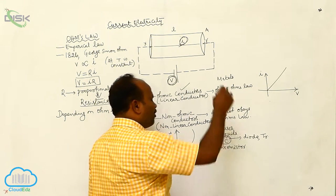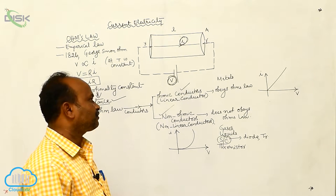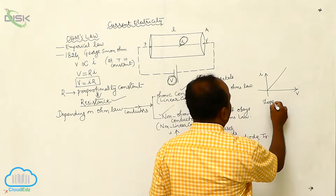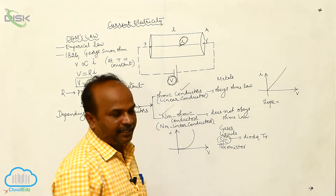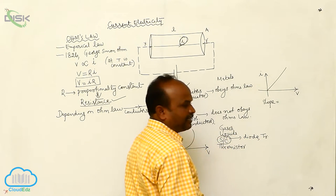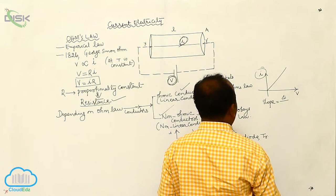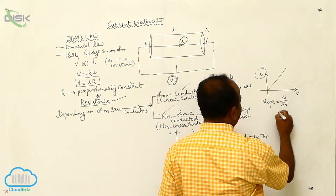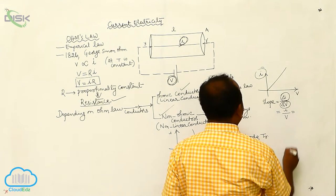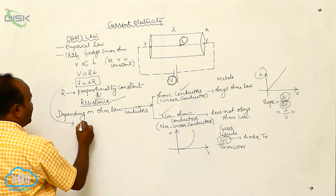Semiconductors and all electronic devices are said to be non-ohmic conductors. Now, what is the slope of the V-I graph? The slope is defined as change in y-coordinate divided by change in x-coordinate. Change in y-coordinate is delta I and change in x-coordinate is delta V, so the slope equals I divided by V.